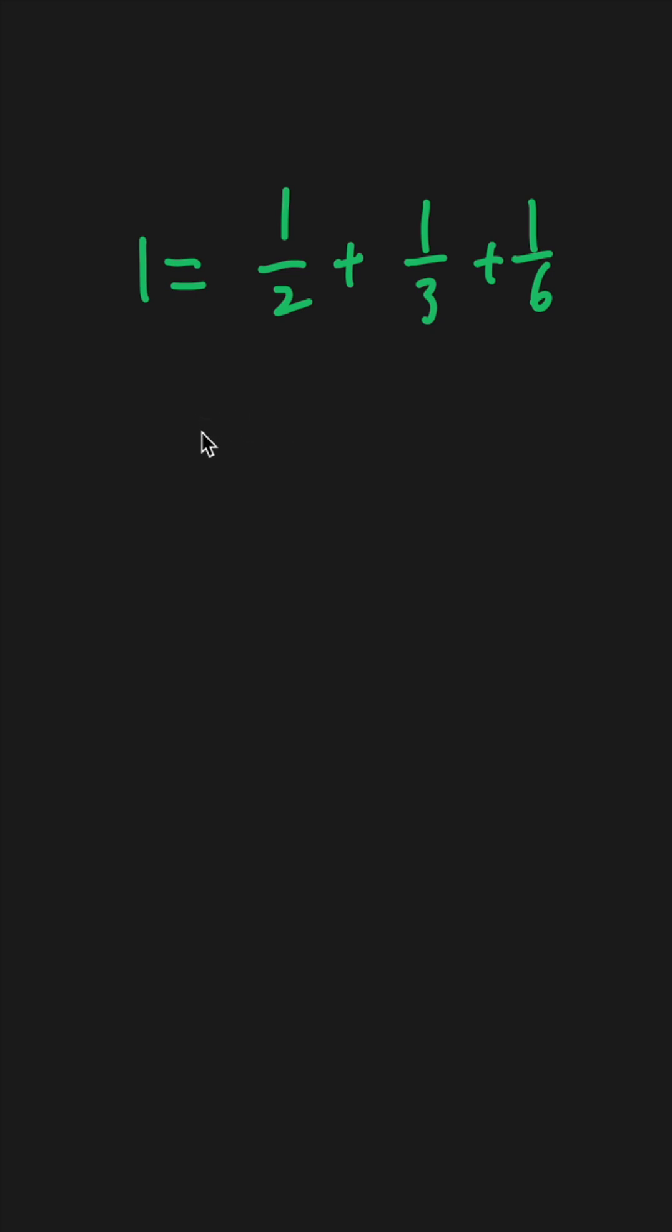But what if we move to an even harder level? How about we let one equal one over a plus one over b plus one over c plus one over d plus one over e. Then we need to find the value for a, b, c, d, and e.